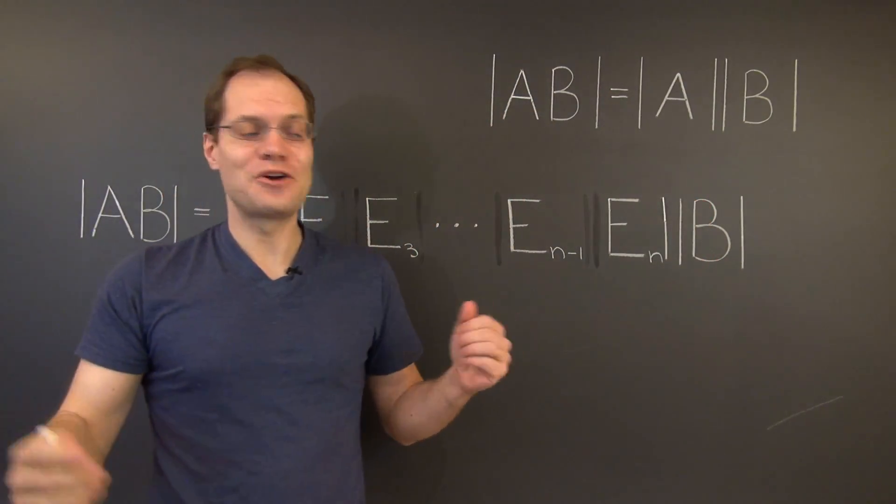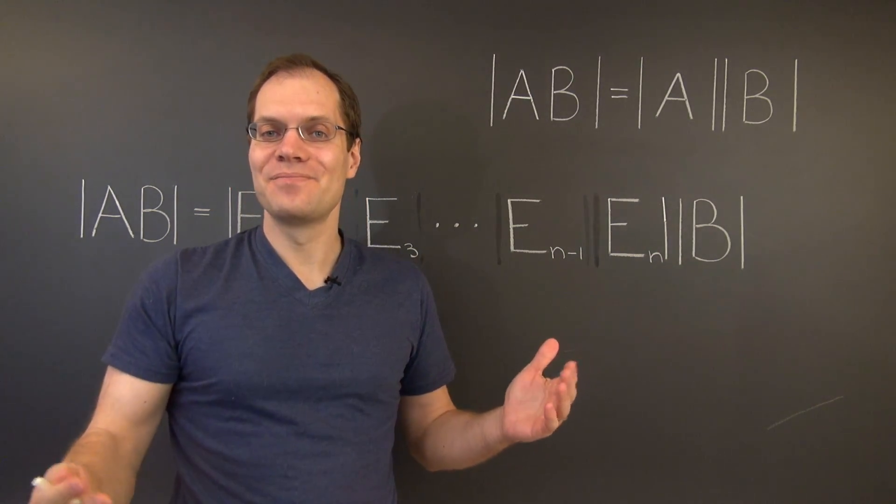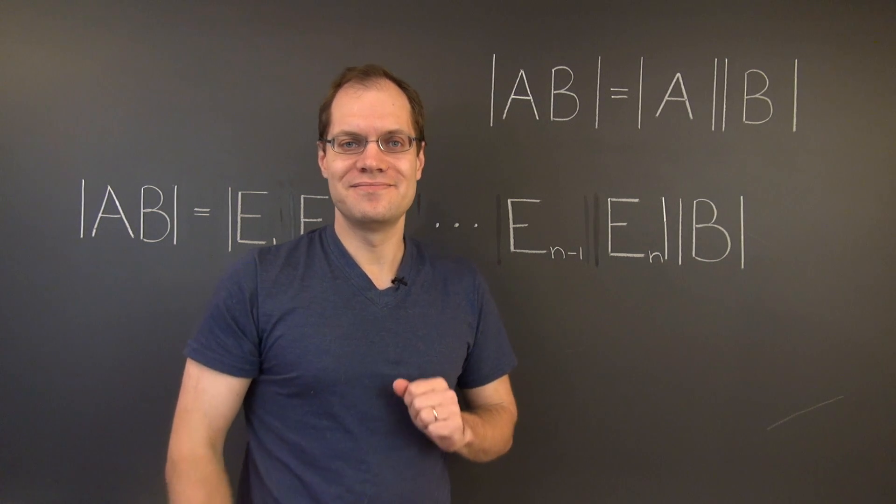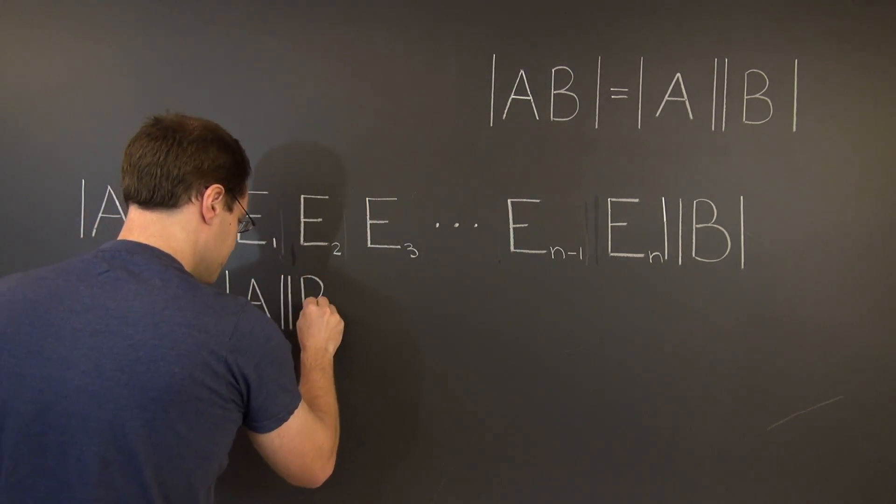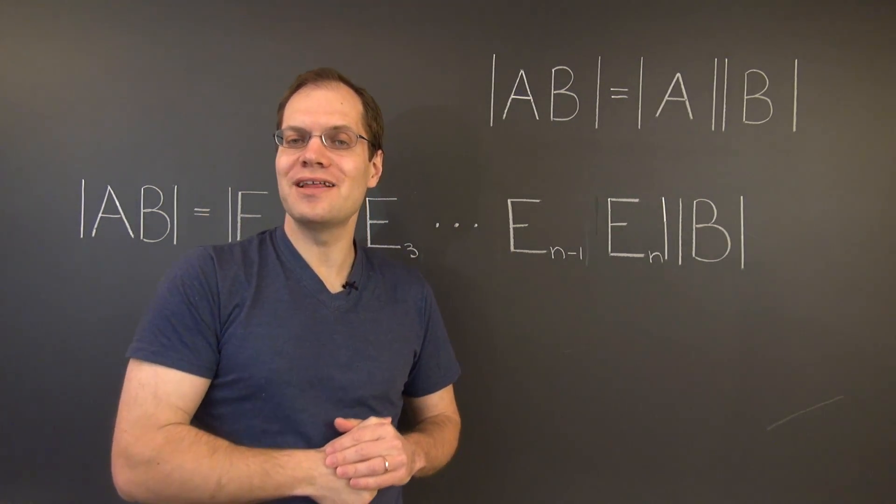Alright, and of course, the product of the elementary matrices is A. So we have the determinant of A times the determinant of B. And this completes the proof for general A and B. And now this important piece of the matrix algebra puzzle is firmly in place.